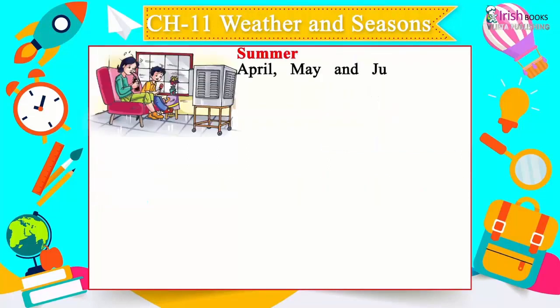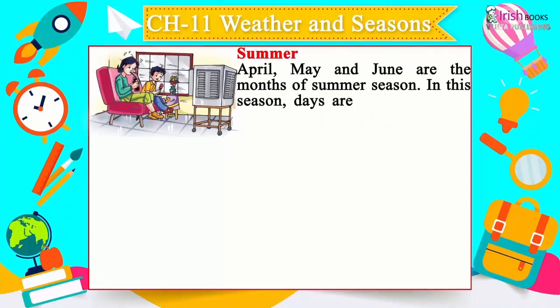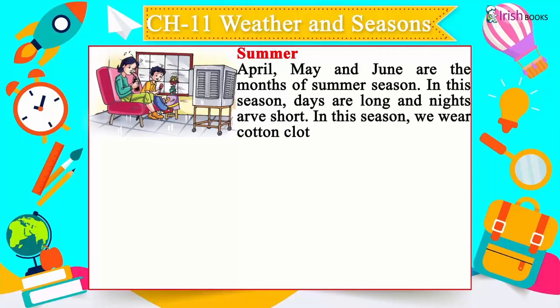April, May, and June are the months of summer season. In this season, days are long and nights are short. We wear cotton clothes. Cold drinks, ice creams, and juices become our favorite. We like to stay indoors on fans, coolers, or air conditioners.